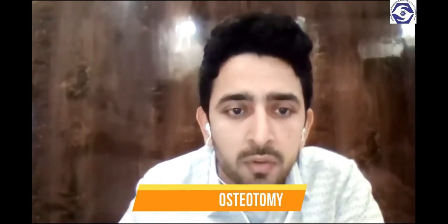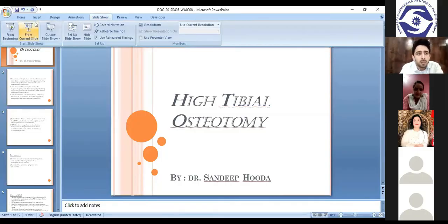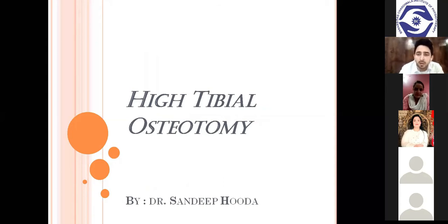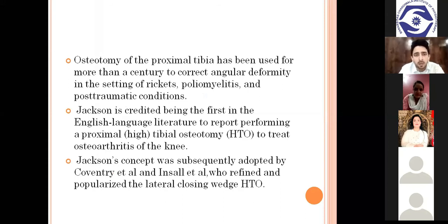I am starting my screen sharing. Today I am going to brief you about high tibial osteotomy, which is less commonly practiced nowadays because of recent advances in orthopedic surgeries like total knee replacement and arthroscopic procedures to detect what kind of arthritis a patient is suffering from. Osteotomy of the proximal tibia has been used for more than a century to correct angular deformity in rickets, poliomyelitis, and post-traumatic conditions. Jackson was the first in English-language literature to report performing a proximal tibial osteotomy to treat osteoarthritis of the knee.